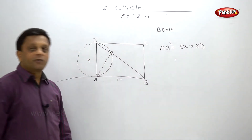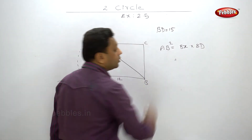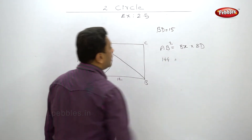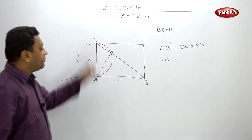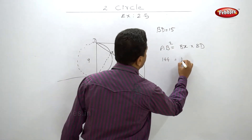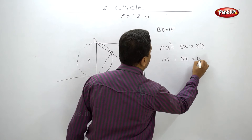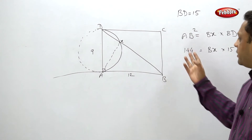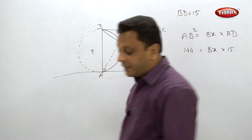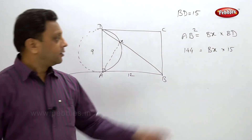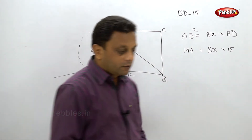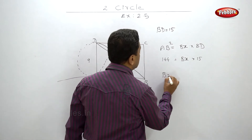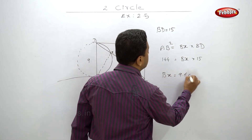AB squared is 144. BX to be found, BD is 15. So BX equals 144 divided by 15. Pause your video and complete this. The answer is BX equals 9.6 centimeters.